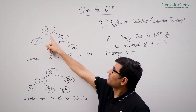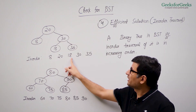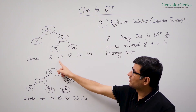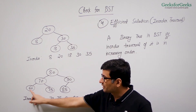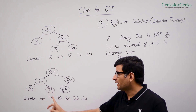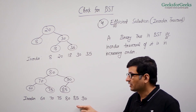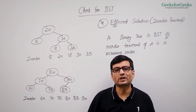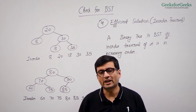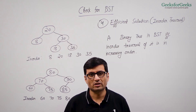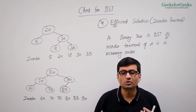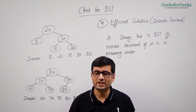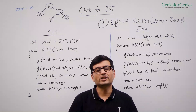If the inorder traversal is sorted, the binary tree is a BST; otherwise it is not. For example, the inorder traversal of the first tree is 8, 20, 18, 30, 35 — not sorted, since 18 comes after 20. The inorder traversal of the valid BST is 60, 70, 75, 80, 85, 90 — which is sorted. One simple implementation stores the traversal in an array and checks if it's sorted. The more interesting challenge is solving this without an auxiliary array, using only O(h) extra space for recursion.